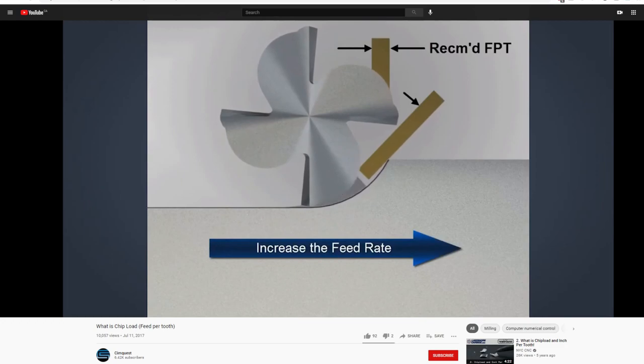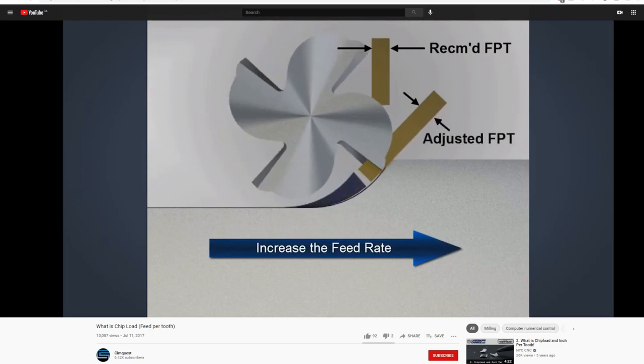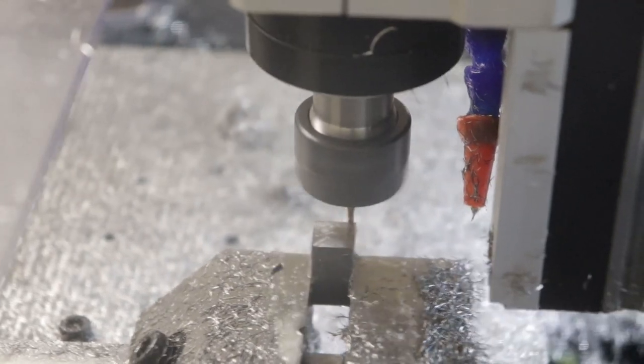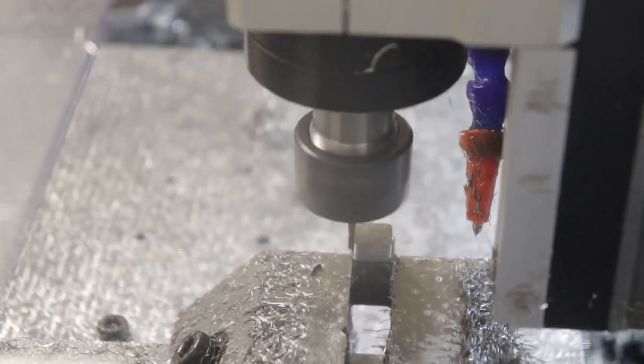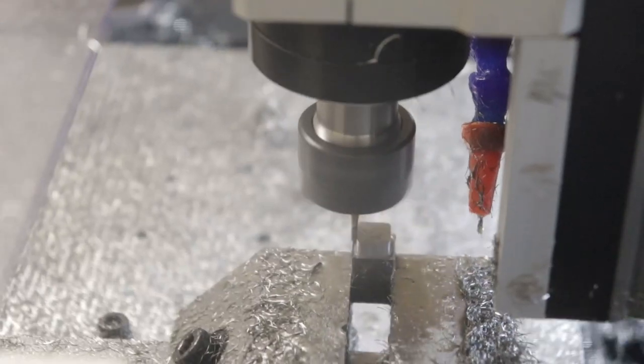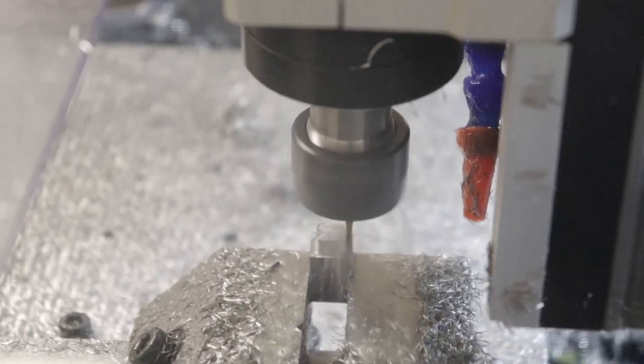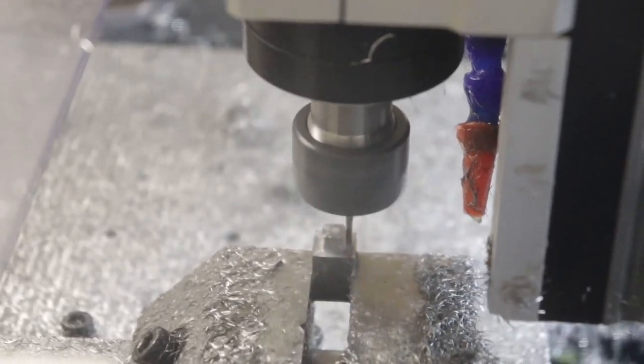Recall that increasing the feed rate alone would not affect anything other than the chip thickness and the magnitude of the cutting forces. As ironic as it sounds, in this situation this helps the tool last longer and cut better, as long as you're not exceeding what the machine can handle. This is one of the reasons that very fast motors are used on the DMC2, because you'll find yourself in many situations that favor shallow step over cuts at high feeds.